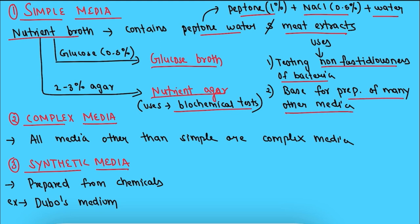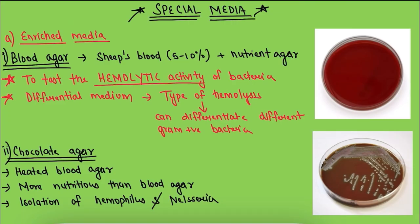Generally, simple media is used for testing non-fastidious bacteria and as a base for preparation of many other media. The second type is complex media — all media other than simple media are complex media. The third type is synthetic media, which is prepared from chemicals; an example is Dubos media.